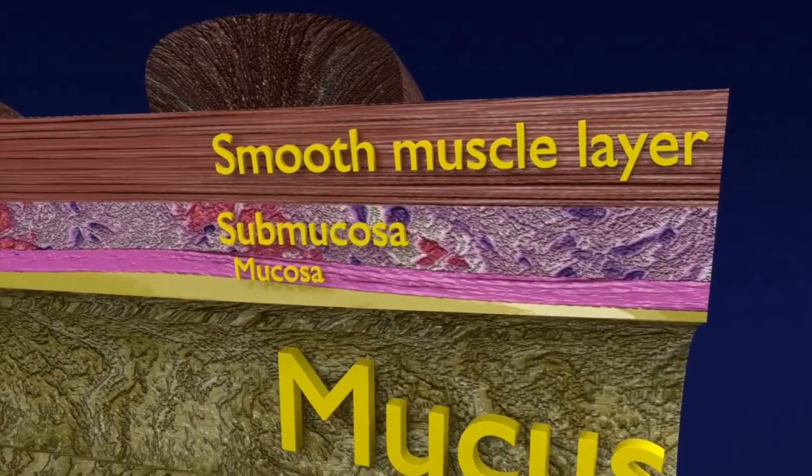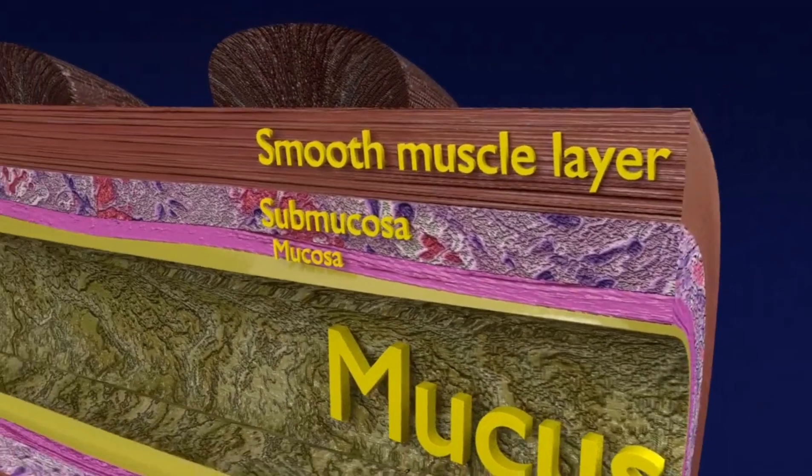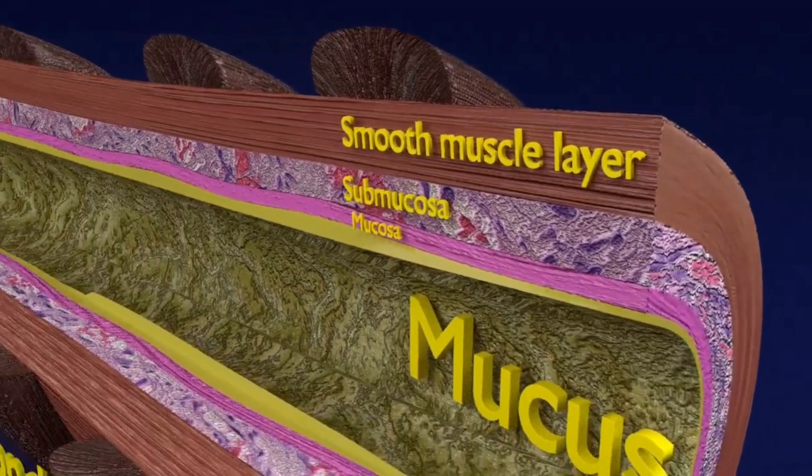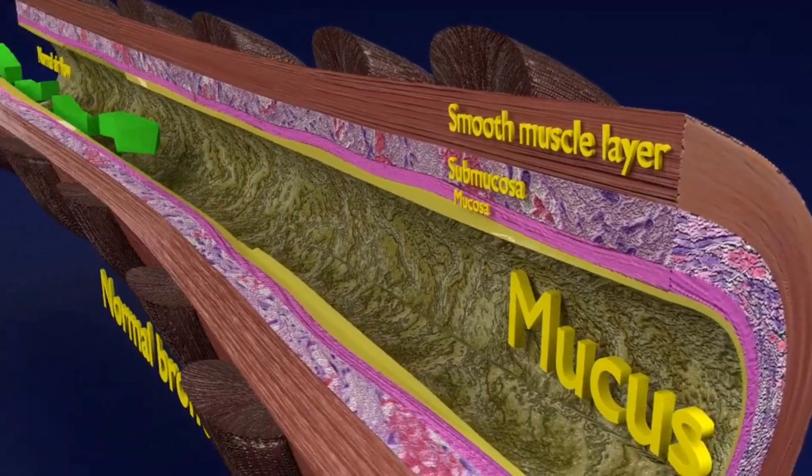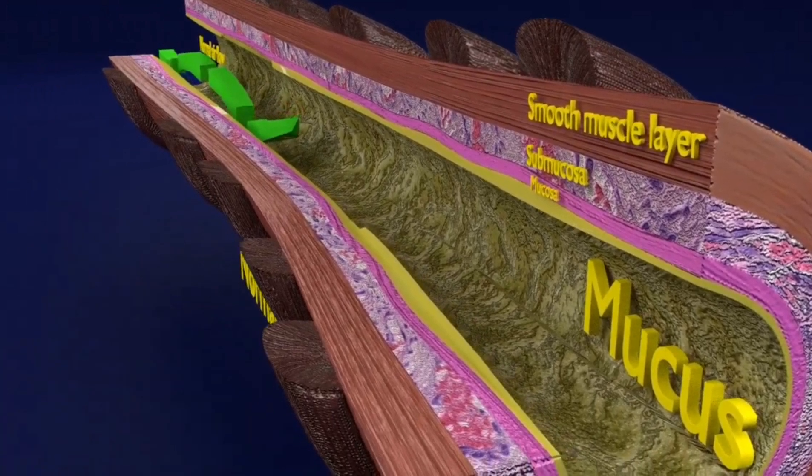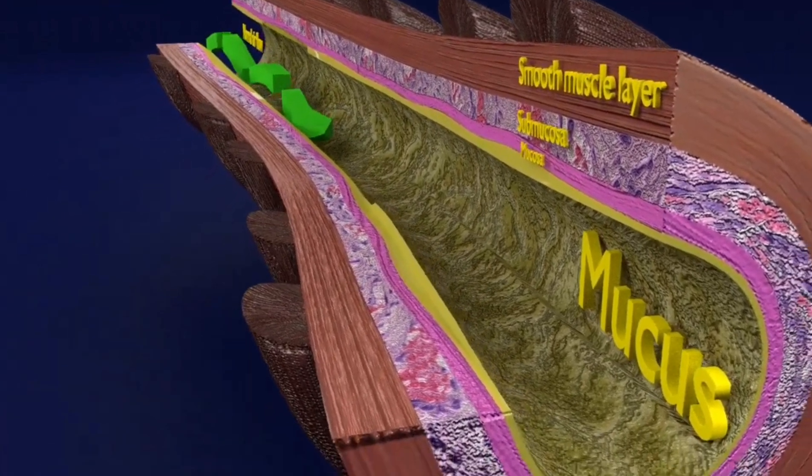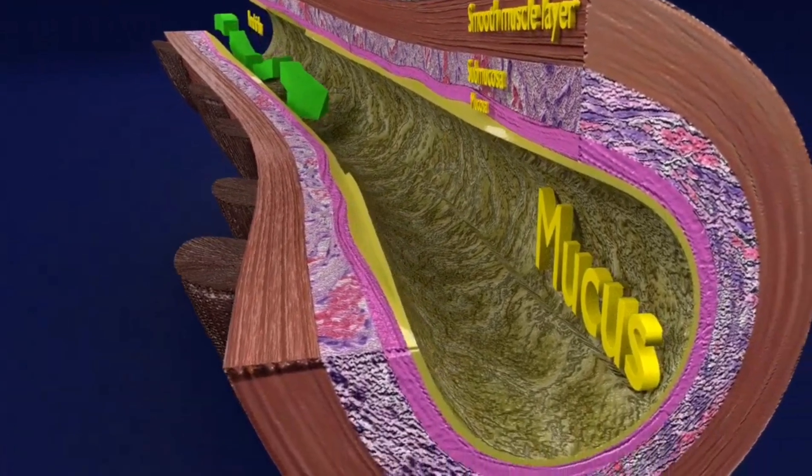The smaller bronchi and bronchioles, in contrast to larger airways, do not have cartilage supporting their walls. The bronchioles also have a thicker smooth muscle layer as compared to larger airways.